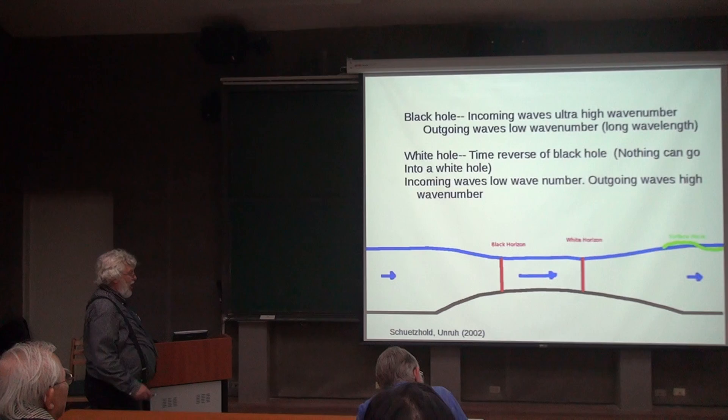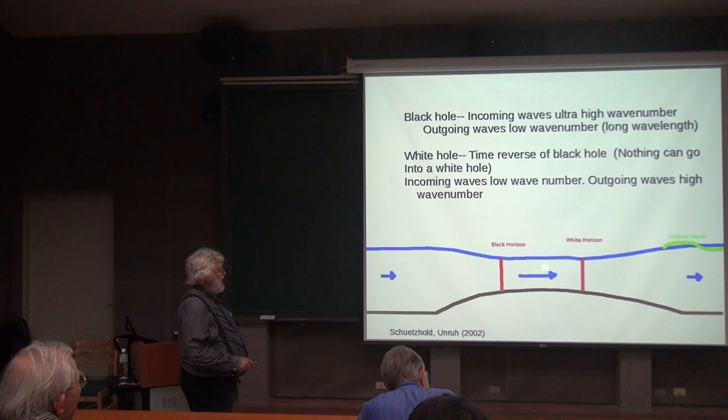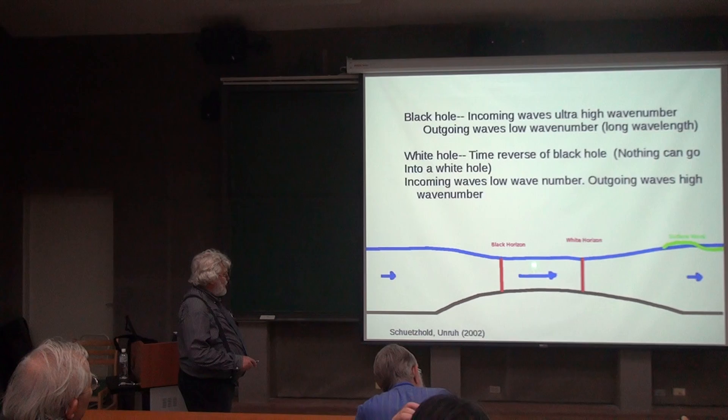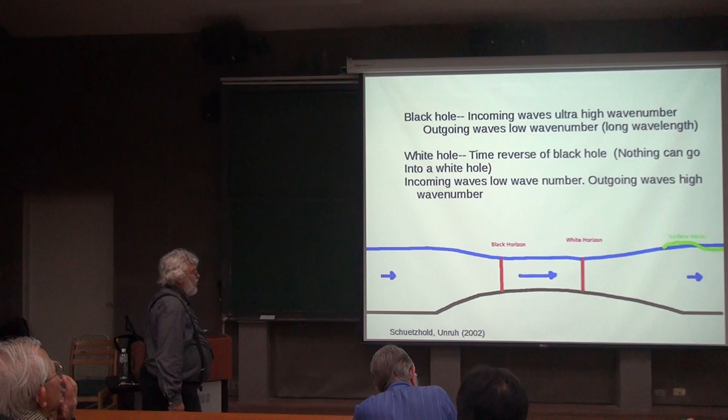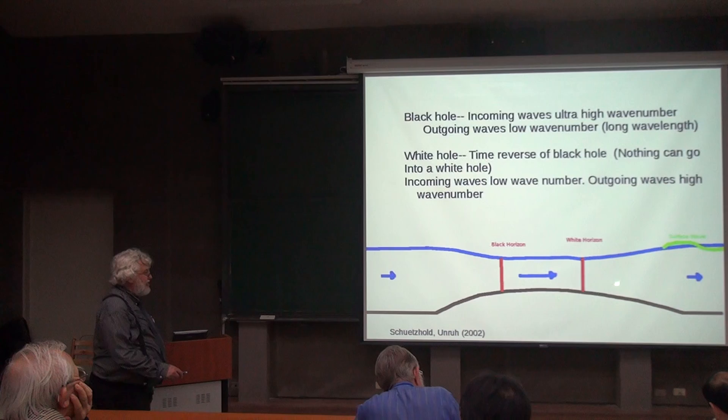We've got a black hole horizon over here, i.e. this is a horizon where low frequency sound waves cannot get out. This fluid is flowing faster than the velocity of sound and so the wave can't get out of this horizon. This is a white hole horizon which is a horizon into which waves cannot travel. This is just the time inverse of this so any physics that one does for a black hole horizon, the same kind of physics should apply to a white hole horizon.